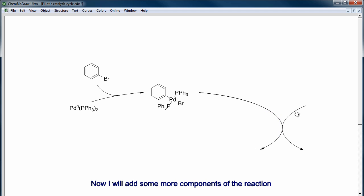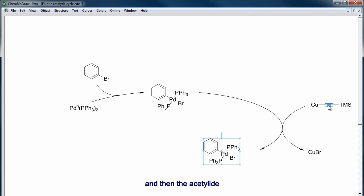Now I will add some more components of the reaction with a copper acetylide, right here, copper and TMS. That will give some copper bromide. And now I'm going to duplicate both molecules, first this one, control, click and drag, and then the acetylide.